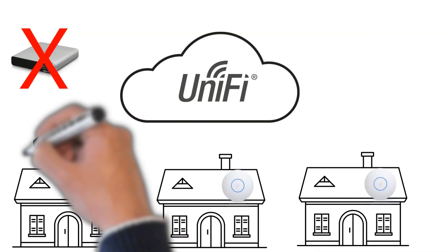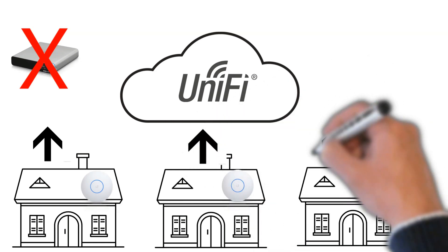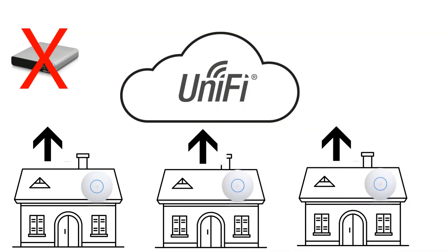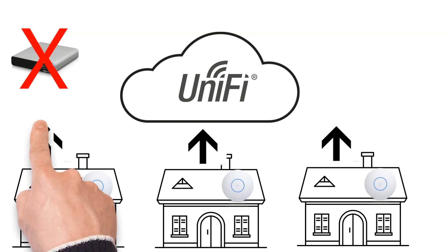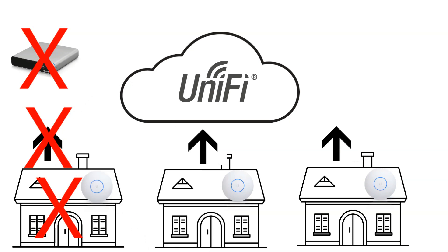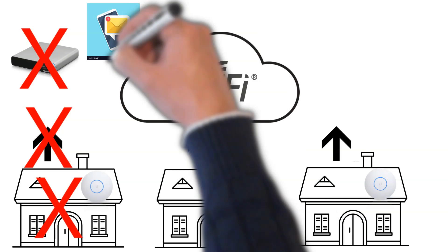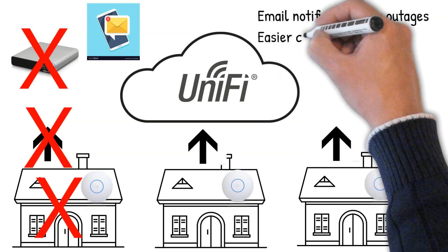All of your sites would use the internet to connect to and be managed through a single controller in the cloud. Also, if there are any issues at a particular location — say there's a network issue or an issue with the internet connection — because the controller is not hosted locally, you would receive an email notification letting you know there's an issue at that location. The main advantages of this setup are: email notifications in the event of outages, and easier centralized management.